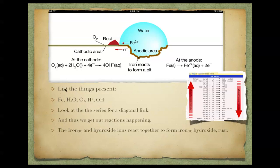So what I'm going to do is list all the things that I have, just like in a galvanic cell. I've got iron solid, I've got water, I've got oxygen gas. You don't really need to write down the hydrogen and the OH because they're in such small concentrations.